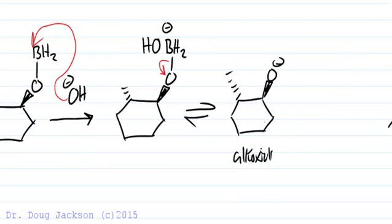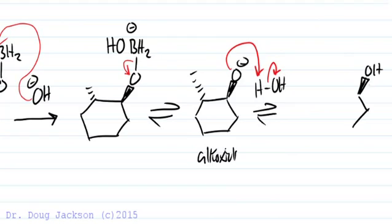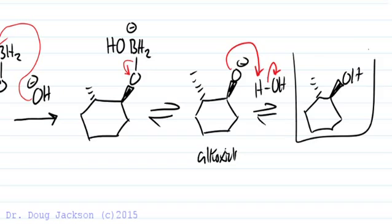Our alkoxide can then, in equilibrium, also protonate in an acid-base reaction with water solvent to form one of our predicted products. The other would come from addition to the opposite side of the alkene.